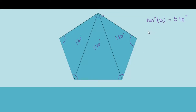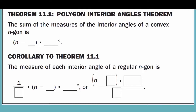To find the interior angles of any polygon, you need to find the number of sides, subtract two, and then multiply by 180. This leads us to Theorem 11.1, the Polygon Interior Angle Theorem: the sum of the measures of the interior angles of a convex n-gon, where n is the number of sides, is (n − 2) × 180 degrees.